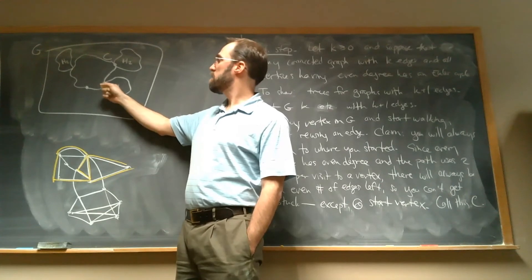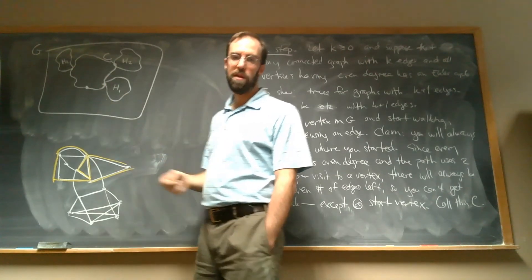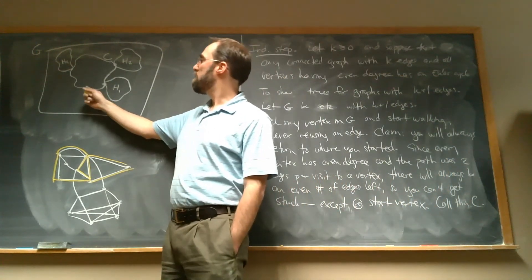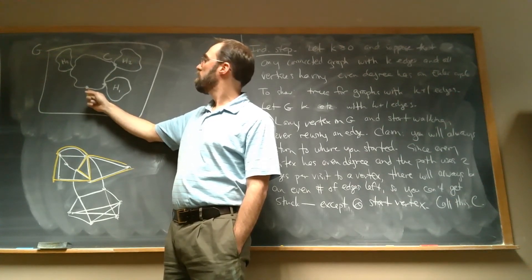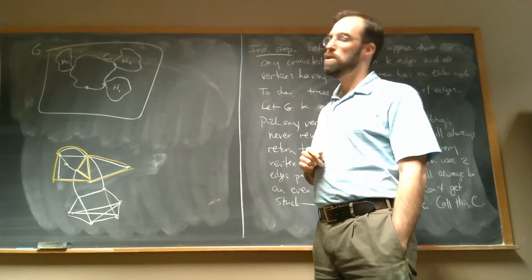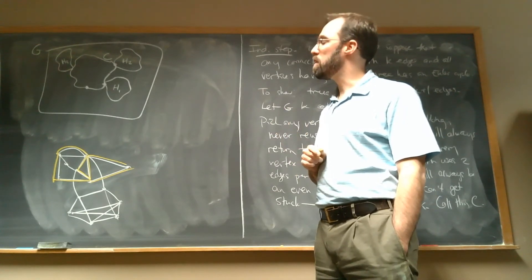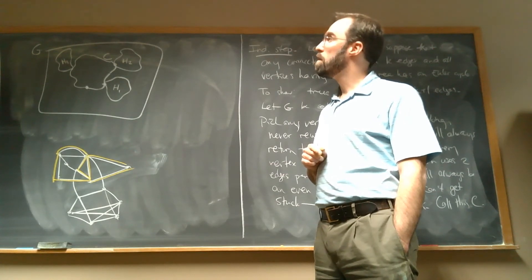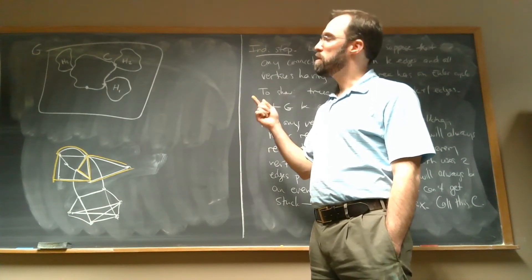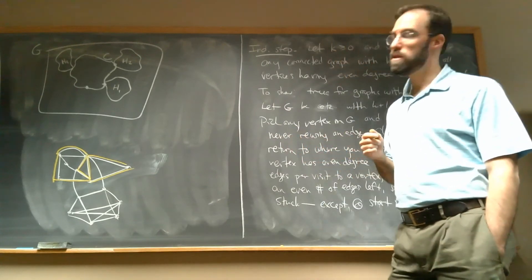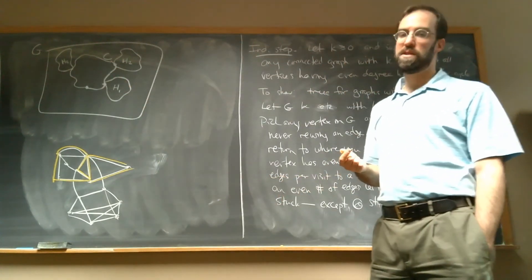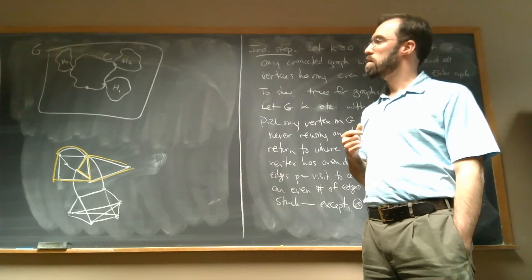Because the graph was connected, all the remaining pieces have to share at least one vertex with the cycle I went on — there's always a path from any vertex in the cycle to anything in one of these H's. They're all smaller, though — they all have fewer than K plus one edges, because I used up some edges in this cycle. So by the induction hypothesis, they all have Euler cycles also.